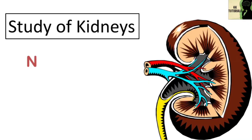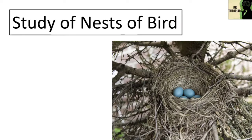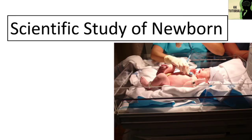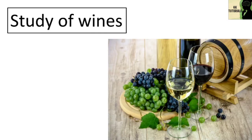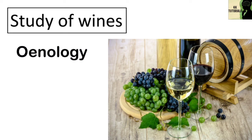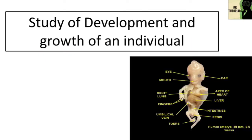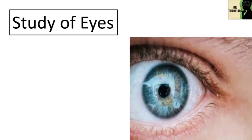The study of kidneys is called nephrology. The study of nests of birds is called nidology. The scientific study of newborns is called neonatology. The study of vines is called enology. The study of development and growth of an individual is called ontogeny.